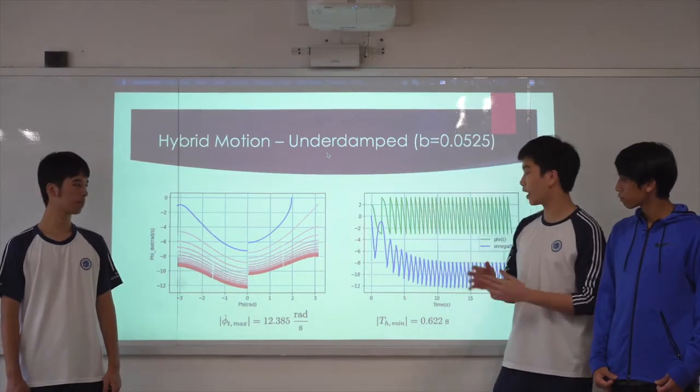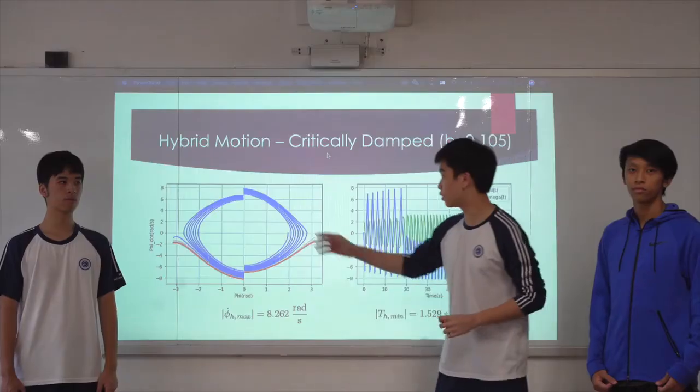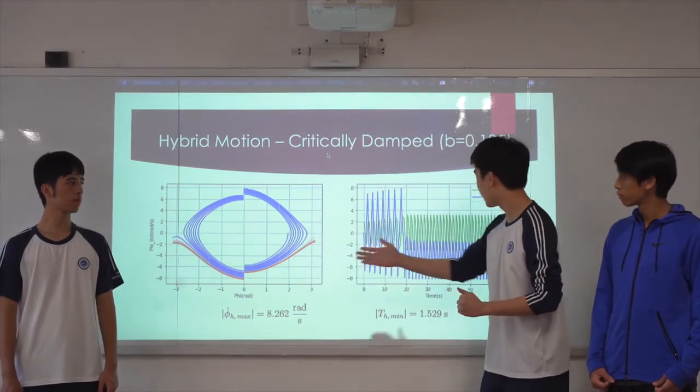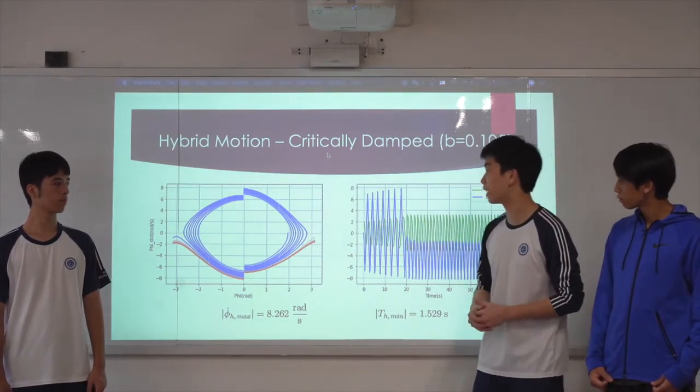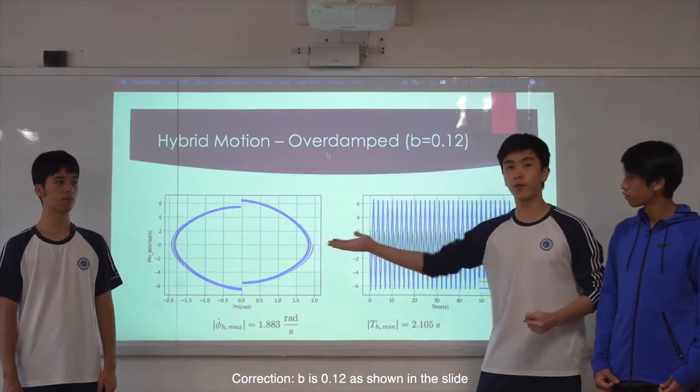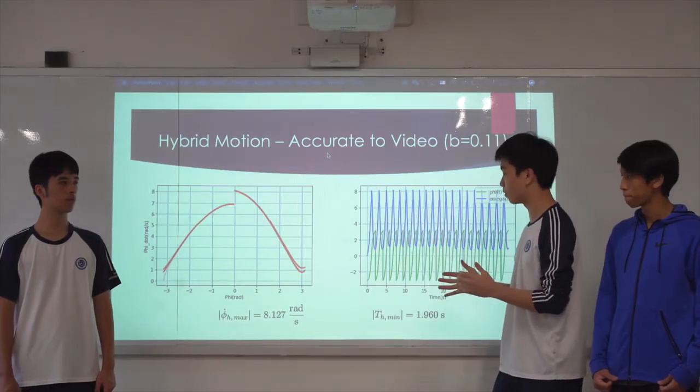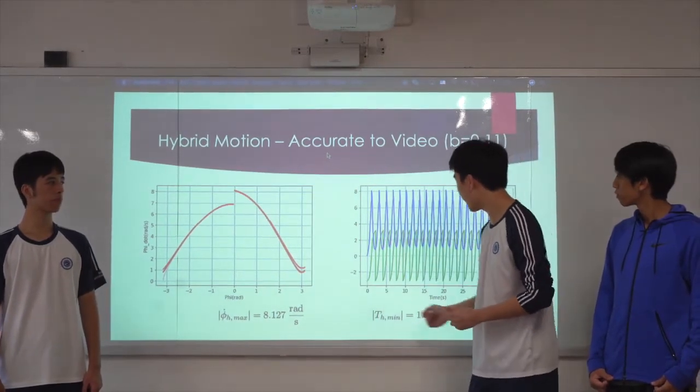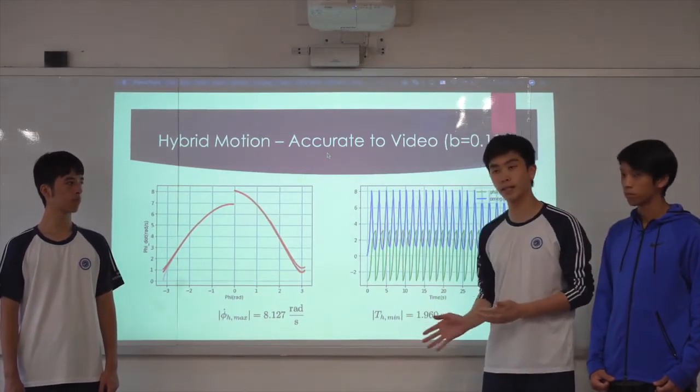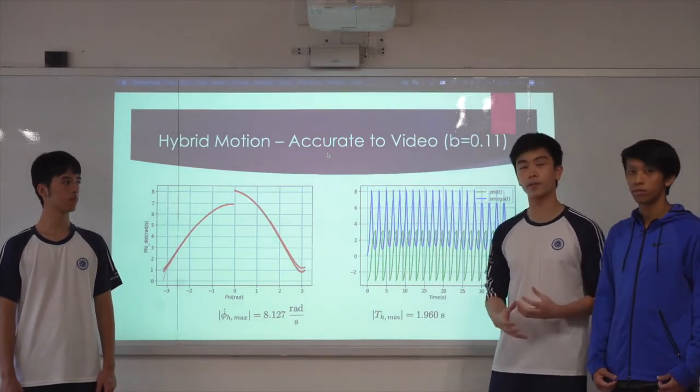Then we have a close to critical damping coefficient of 1.05, which you see has a lot of turns in the alternating section, and then it becomes relatively stable motion. Then we have an overdamped coefficient of b equals 1.2 in which the motion never reaches full rotation. Finally, to accurately simulate the bird's motion, we combined these into a model of just full rotations. We used b equals 1.1 for this. We can see our end results are quite realistic, as both the period and phi dot max are pretty close to what we observed in the video.